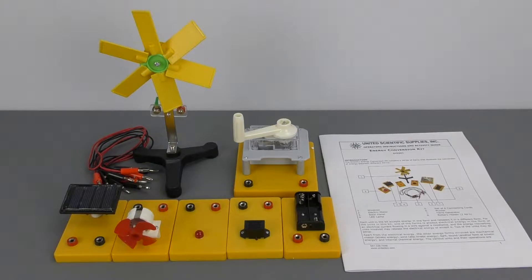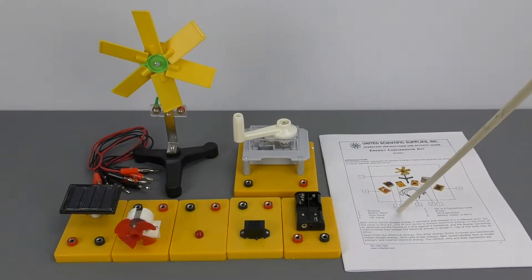The kit contains a windmill, a solar panel, a motor, an LED lamp, a buzzer, a AA battery holder, a hand generator, six connecting wires, and an activity guide.